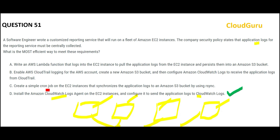Option B says to use CloudTrail. CloudTrail tells you about user activity — what happened, when, who did what. It will not tell you how the application is behaving — like CPU or memory usage. You don't want to know that a specific user logged into your application; that's CloudTrail's job, not what we need here. Option A says write a Lambda function that logs into EC2 to pull application logs — again, that's a custom solution.